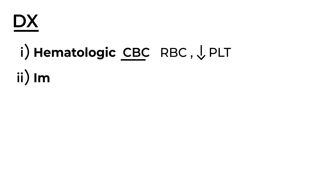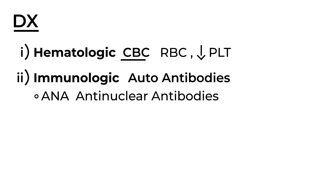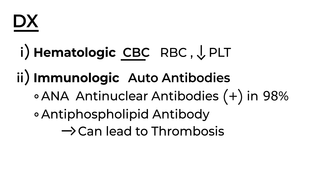The second category is the immunologic aspect of lupus. There are two key antibodies to measure. The first is ANA — anti-nuclear antibody — which is positive in 98% of lupus patients. The second is anti-phospholipid antibody, which is also measured. This can lead to thrombosis, making it a clinically significant test.